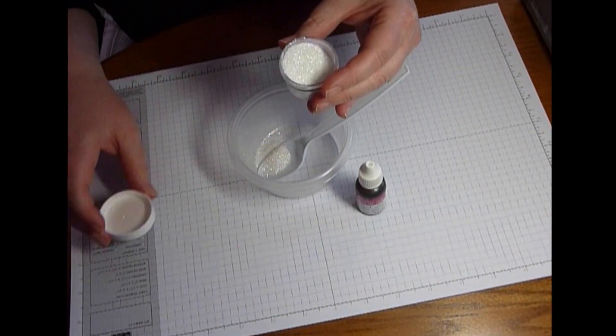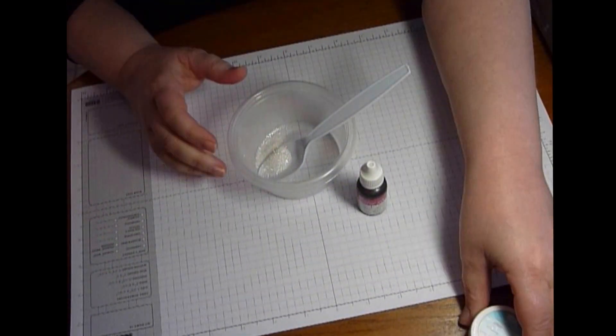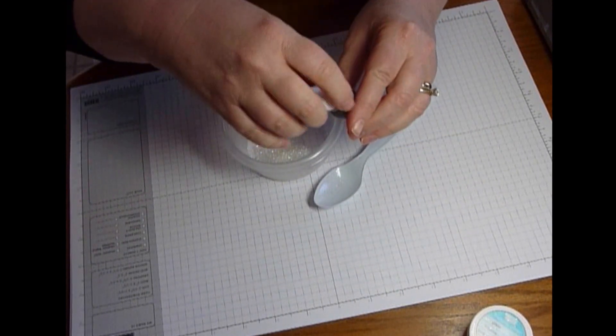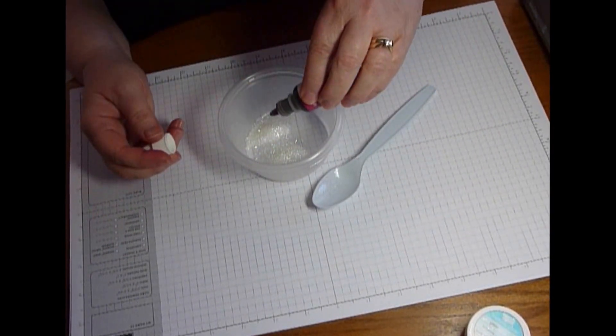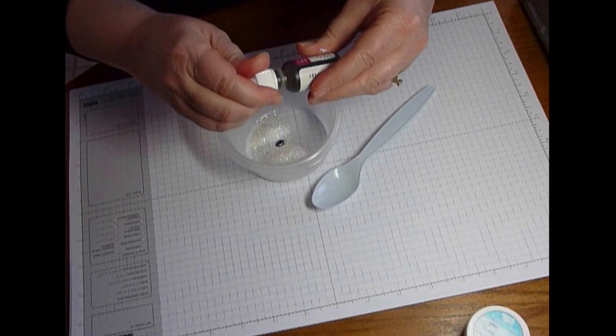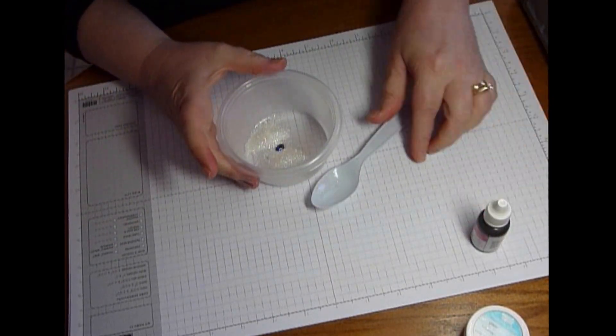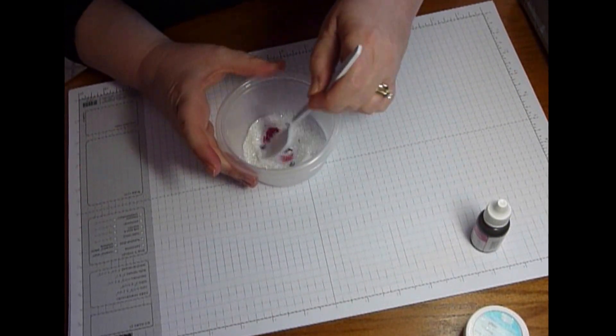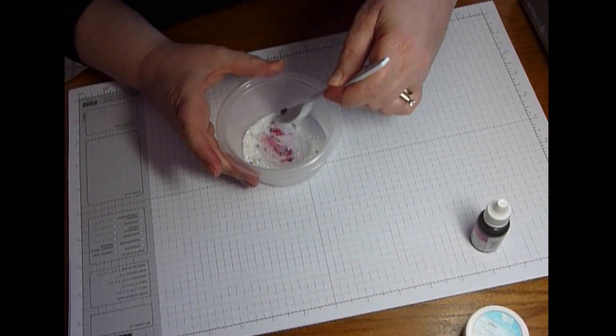Add just a little bit of glitter into a container, just like that. Now this glitter is wonderfully ultra fine, so it's going to pick up the color really well. I'm just going to add a drop of reinker, in this case it's rose red, to the glitter and start with a spoon or something else working it in. You're going to see that the color starts to get added there.